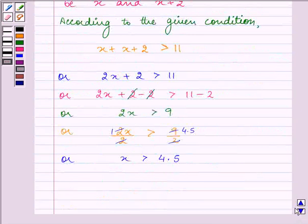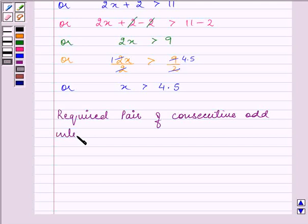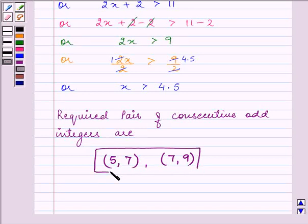So the required pair of consecutive odd integers are 5 and 7, and 7 and 9. They both are greater than 4.5 and less than 10.